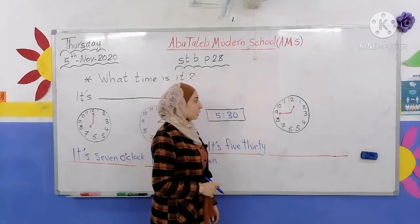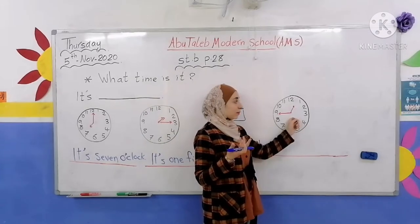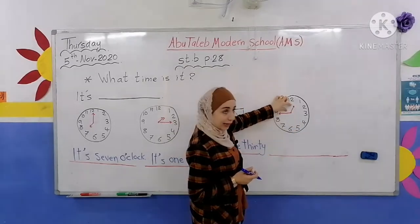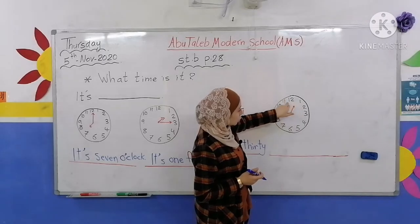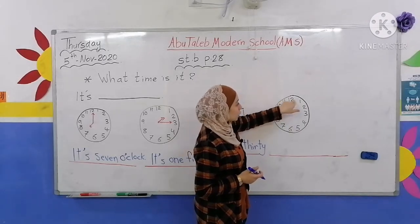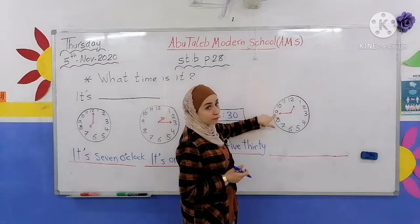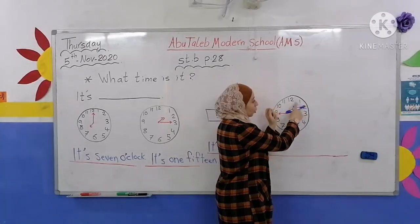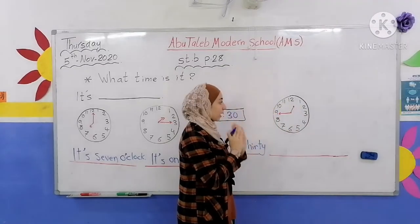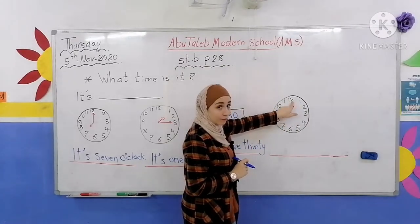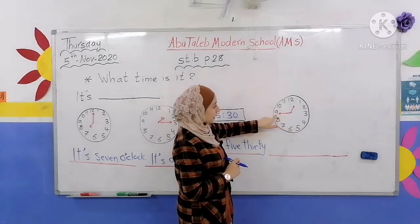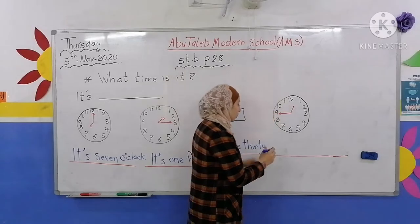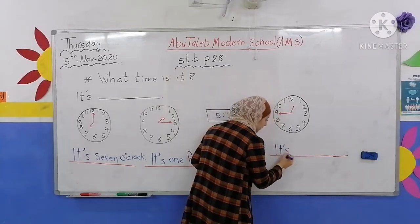Look here, what time is it? Notice the small hand is between twelve and one, but it hasn't reached one o'clock yet. So we say: It's twelve. Then look at the big hand — it's on nine, which means forty five. So it's twelve forty five — اثنتا عشرة وخمسة وأربعون دقيقة.